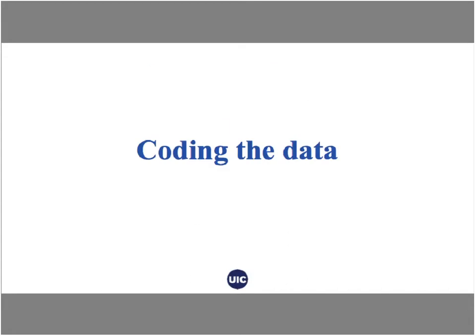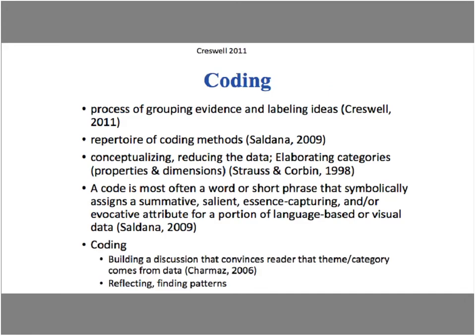Coding is a process of grouping evidence and labeling ideas. I draw from several authors here, as there's a lot of diversity in qualitative research. Cresswell talks about grouping and labeling. Saldana talks about coding as having a repertoire of coding approaches — depending on your research question and data, you might use different kinds. Strauss and Corbin, who are more rigid in their coding, describe it as reducing the data to elaborate categories, properties, and dimensions, trying to identify what really matters and what overarching themes emerge.